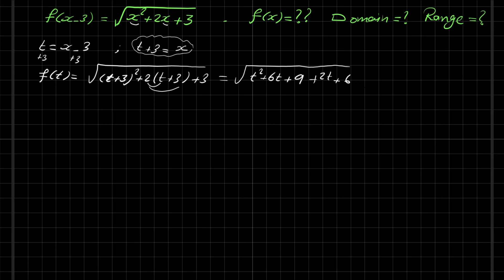t squared plus 6t plus 2t, this is 8t, and 9 plus 6 plus 3 equals 18. So we get f(t) equals square root of t squared plus 8t plus 18.